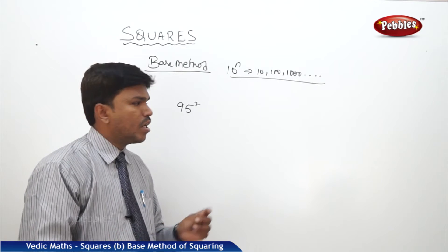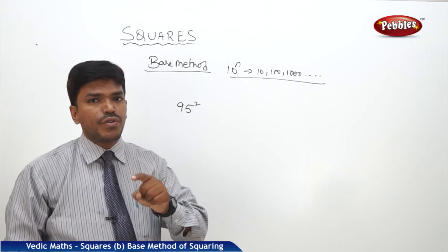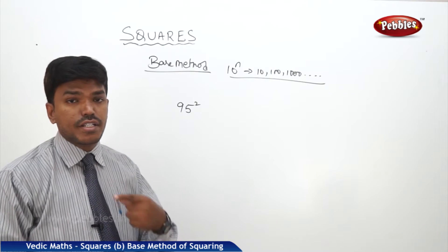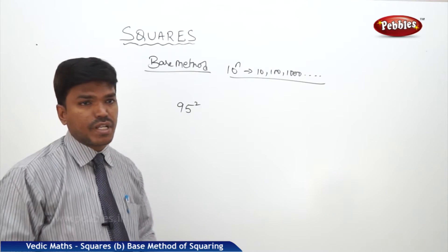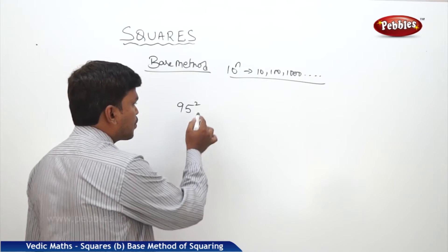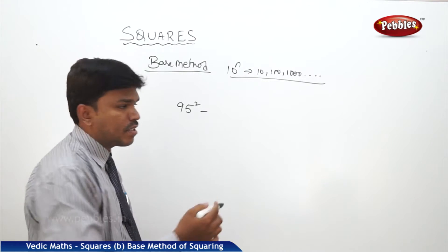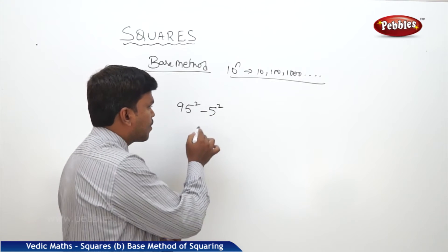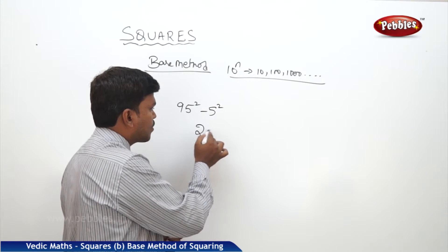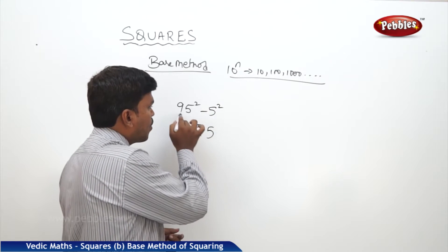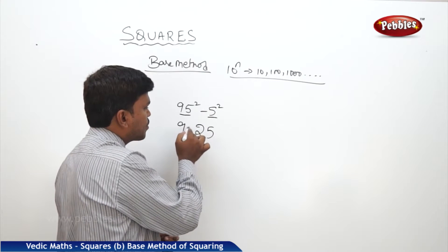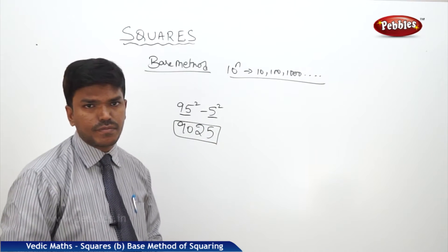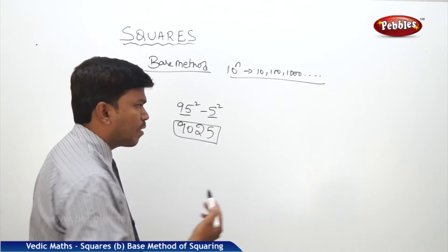First, check how much 95 is more or less than the base. It is less than the base, so put minus here — and how much less? 5. So what is 5 squared? 25. Write 25 on the right. Now 95 minus 5 is 90. So your answer is 9025.